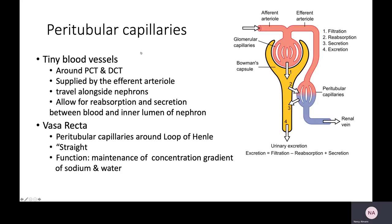There is a network of capillaries surrounding the tubules known as the peritubular capillaries, which arise from the efferent arteriole and run alongside the nephrons. They allow for reabsorption and secretion — the other two steps of urine formation. The vasa recta are peritubular capillaries that surround the loop of Henle; they are relatively straight and their function is maintenance of a specific concentration gradient of both sodium and water.